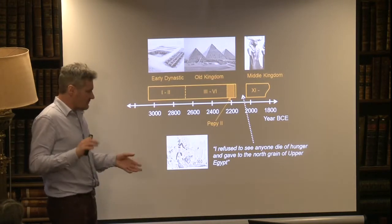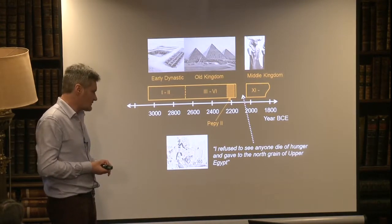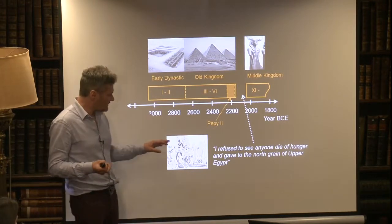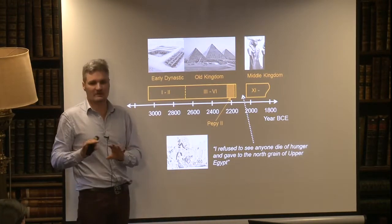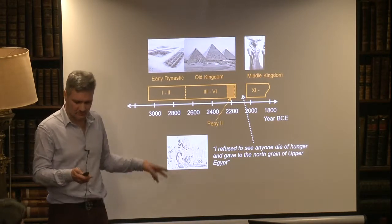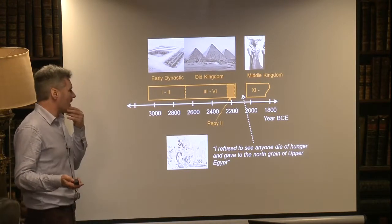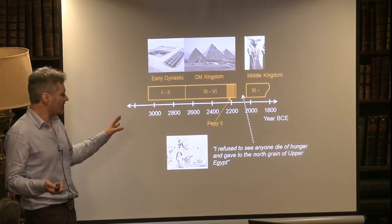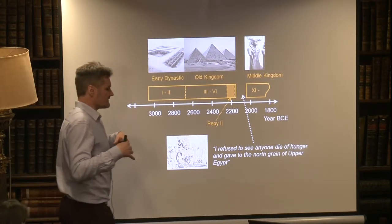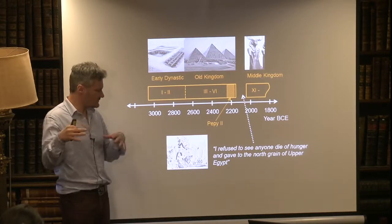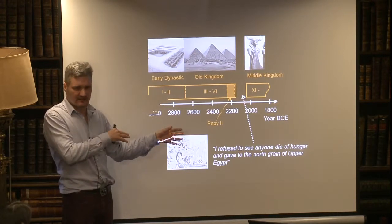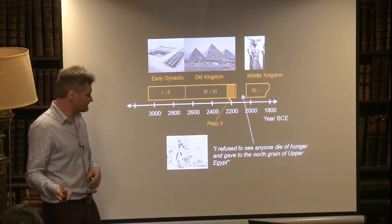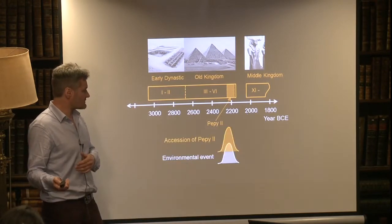There is some circumstantial evidence from the time period — documentation of famines and drought. This is a tomb inscription. But we can't necessarily trust these in their entirety because it might just have been the ruler to whom the grave is dedicated highlighting their own contribution to their community — 'I saved them from dying of hunger' and so on.